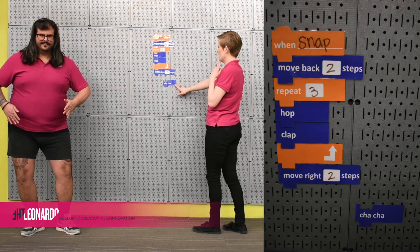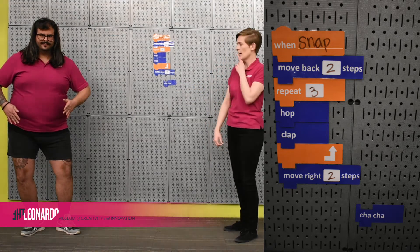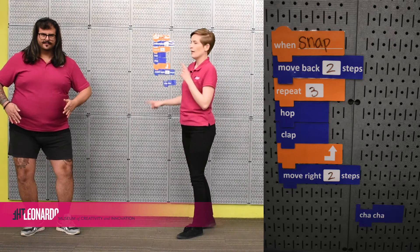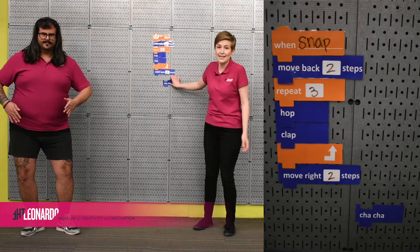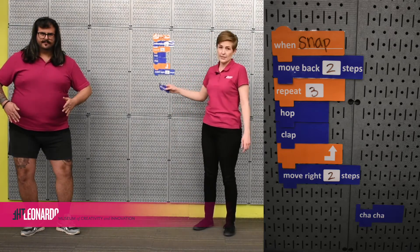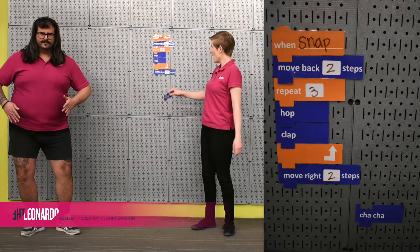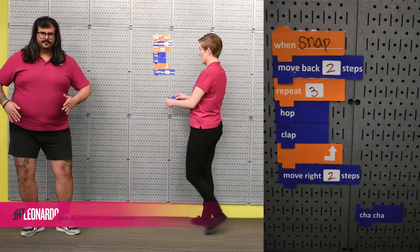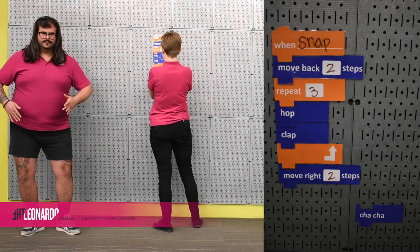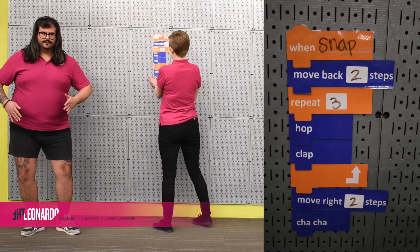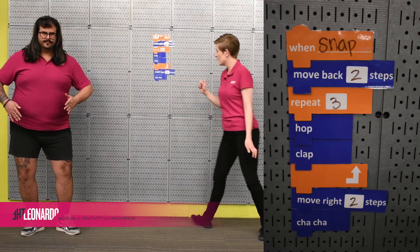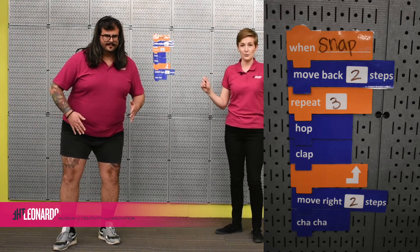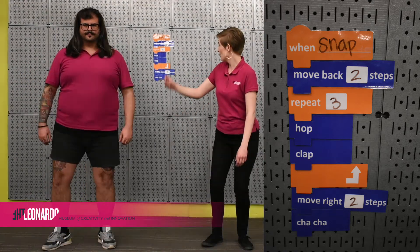I need to figure out why my cha-cha didn't happen. I noticed this block looks a little separated — that tells me it's not in my sequence, so the computer didn't read it as something that has to happen when I snap. Let me try and add it on to the end of my blocks. Okay, let's see — he's reset, let's give it a shot.